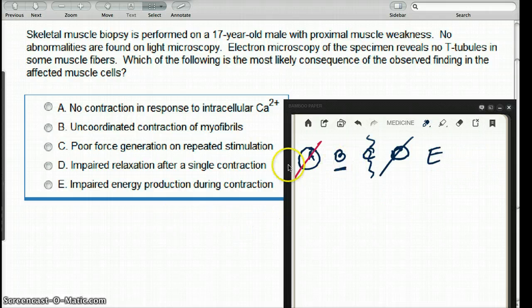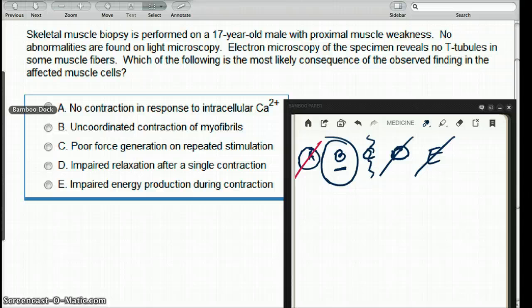What about choice E? Impaired energy production during contraction? Contraction has nothing to do with generation of energy. So again, that is not a possible answer. In this case, the answer is going to be B: uncoordinated contraction of the myofibrils.